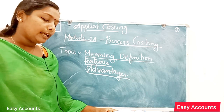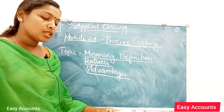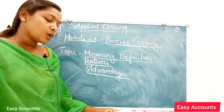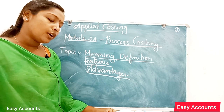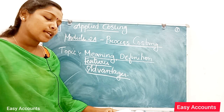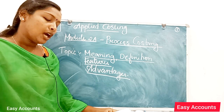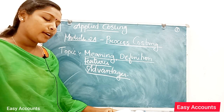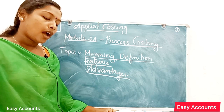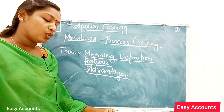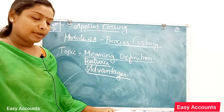What is process costing? Process costing is a method of costing applied in those undertakings where the process of production can be divided into distinct stages, and the cost can be accumulated for each process separately.